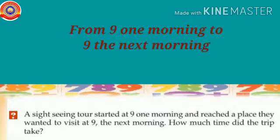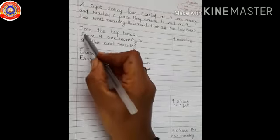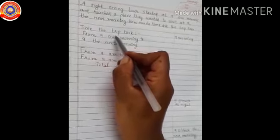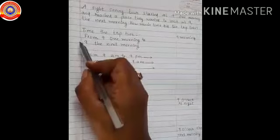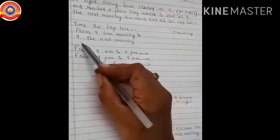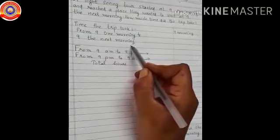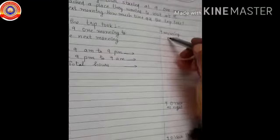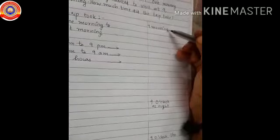A sightseeing tour started at 9.01 in the morning and reached the place they wanted to visit at 9.01 the next morning. How much time did the trip take? Let's find out the hours from 9.01 morning to 9.01 the next morning.